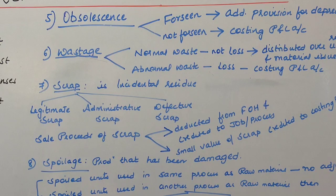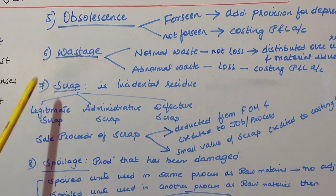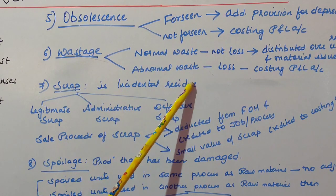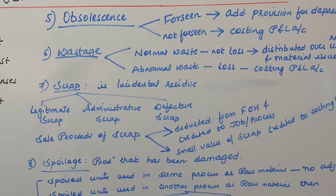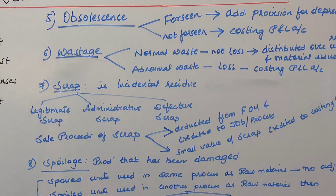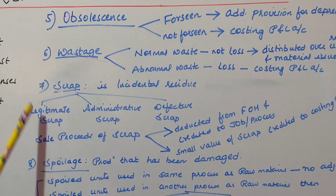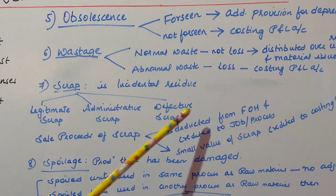Scrap is any incidental residue arising out of a manufacturing process that is of small quantity, low value, and cannot be reprocessed further. Scrap is of three types: legitimate scrap — which can be estimated in advance (e.g., pieces of wood lost while making a cot, pieces of furniture, pieces of metal, crush of sugarcane); administrative scrap — arising out of administrative decisions; and defective scrap — arising due to use of non-qualitative materials, lack of skills, or outdated production methods.